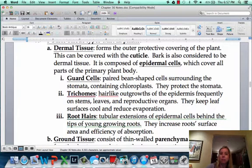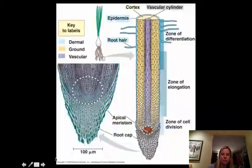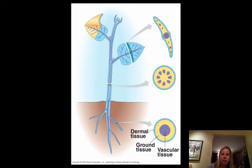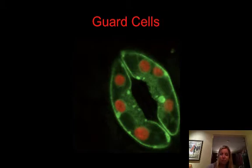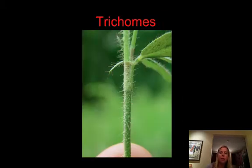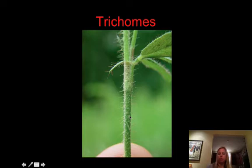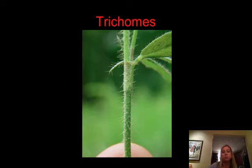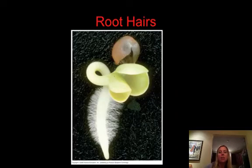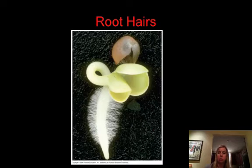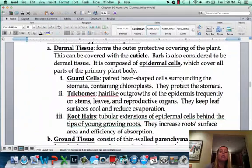Dermal tissue is made of epidermal cells in a few different forms. You can have guard cells, which protect the stomata. You can also have trichomes — those hairs sticking off the plant — which hold onto dew, keep moisture on the plant to keep surfaces cool, and create shadows to reduce heat. You also have root hairs, which extend off the root and give it more surface area to absorb even more nutrients and water.